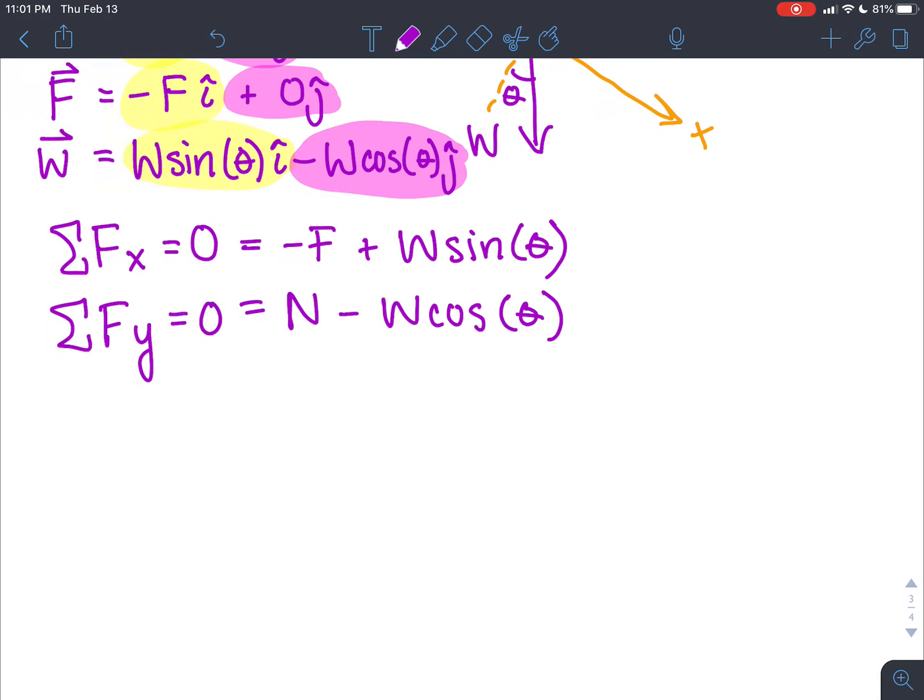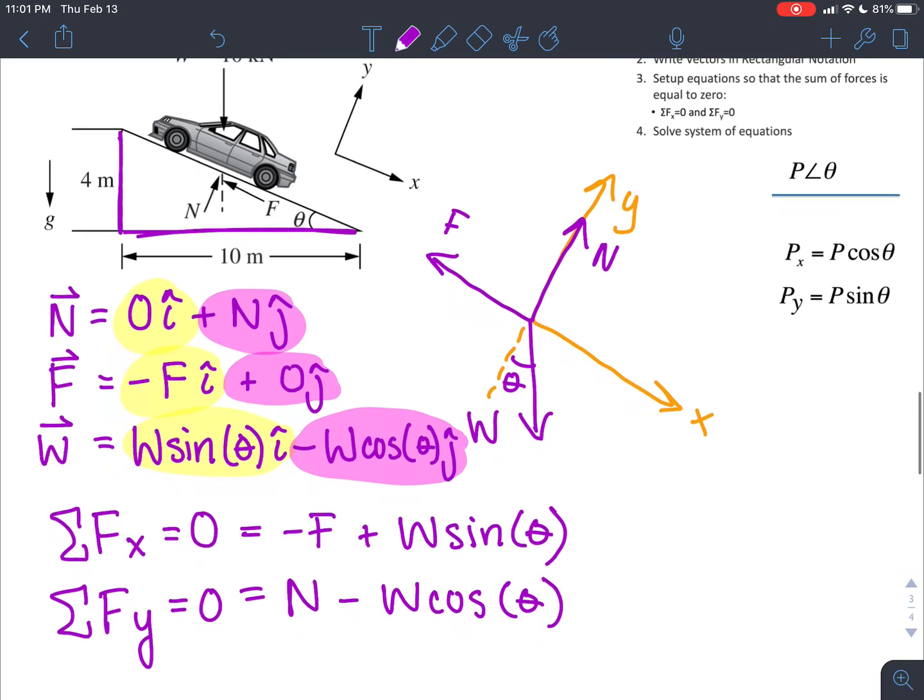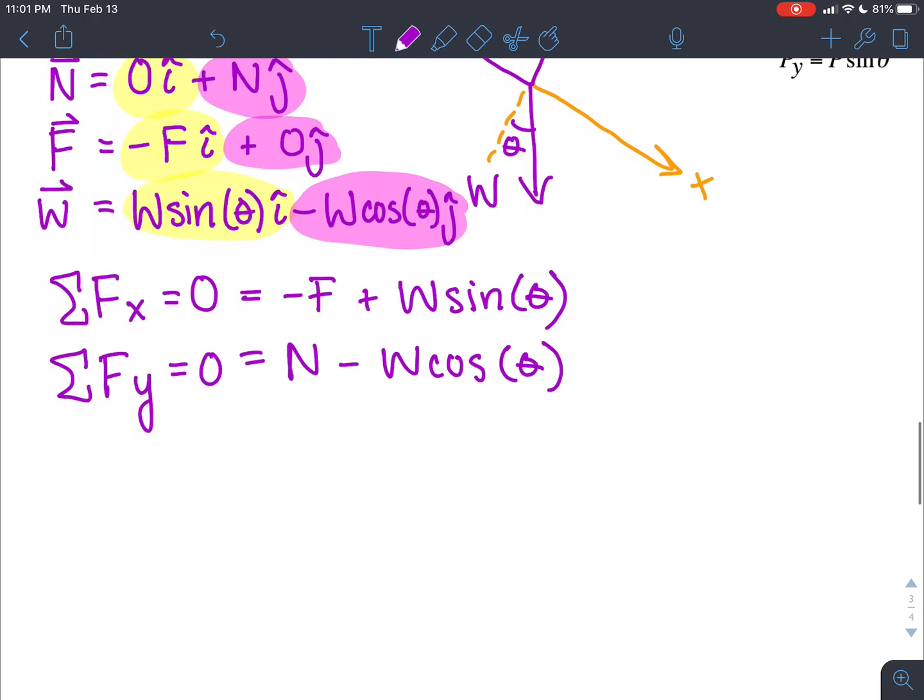And actually the way that we get our theta is from knowing the sides of the triangle. So we have this 4 meters and this 10 meters. And so we can use that to get our angle. So theta equals the arc tangent of 4 over 10, and that gives us 21.8 degrees. So there's our theta.